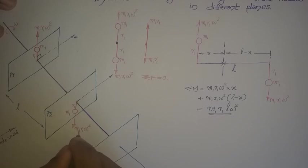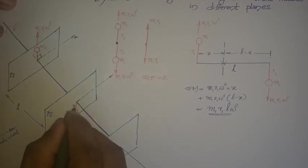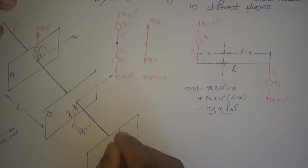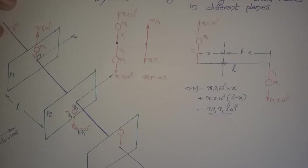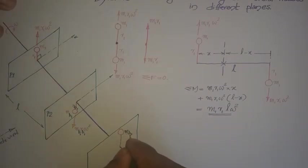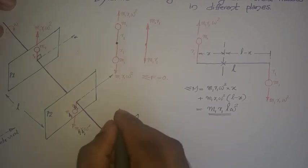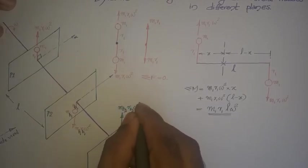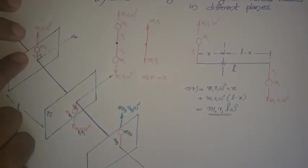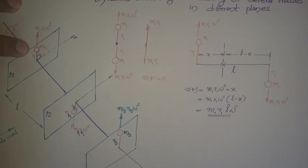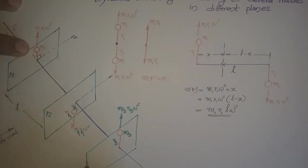Suppose the first balancing mass is mb1 at a radius of rb1 in one plane. In another plane we also add a second balancing mass mb2 at a radius of rb2, which will create a centrifugal force of mb2 rb2 omega squared in the vertically upward direction. So now we have the original mass m1 r1 in plane 1, and two balancing masses mb1 and mb2 in planes P2 and P3 respectively.